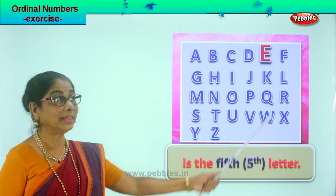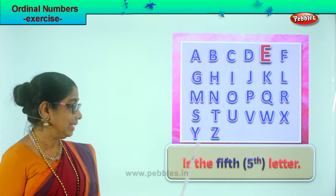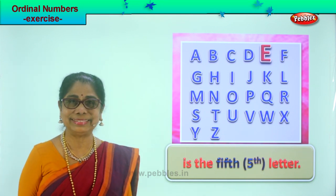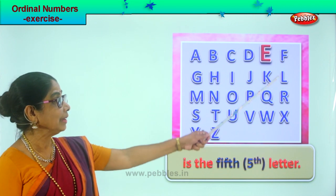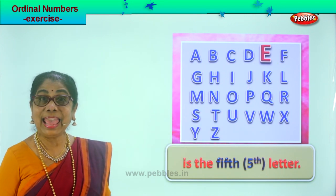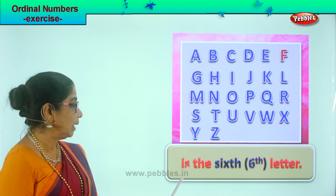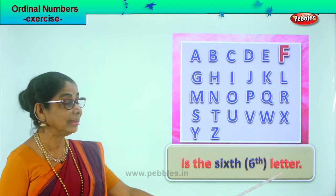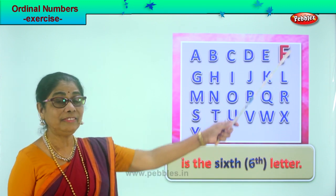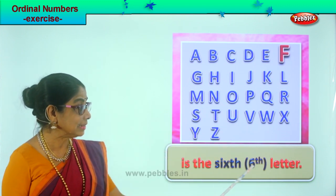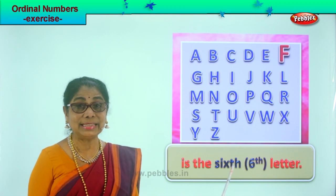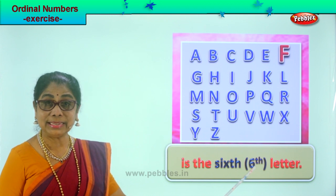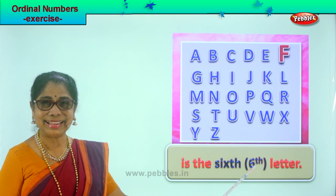Look at the spelling of fifth, and the representation is number five and TH. E is the fifth letter. Next, letter F. F is the sixth letter. Look at the spelling — sixth. The representation is number six and TH. F is the sixth letter.